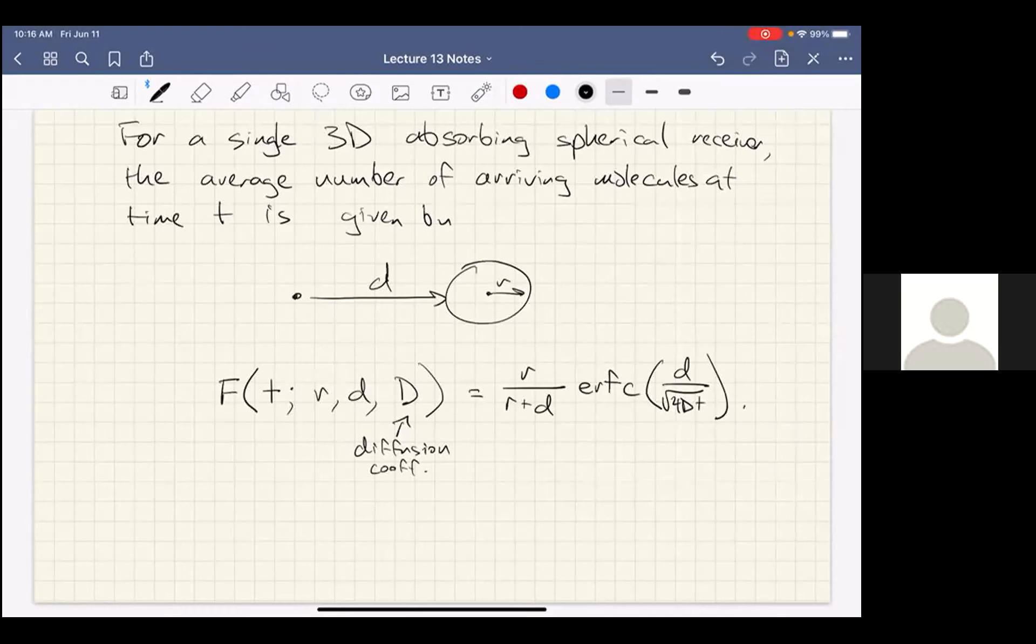So now we know, basically this is in some sense the impulse response of the system. If you release molecules from here at time zero, the number that you will receive is given by this r over r plus d, erfc(d over 4Dt).